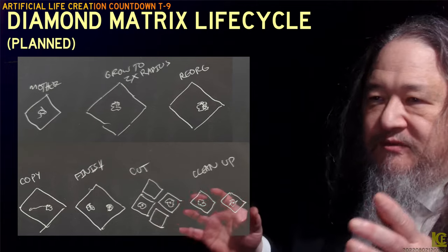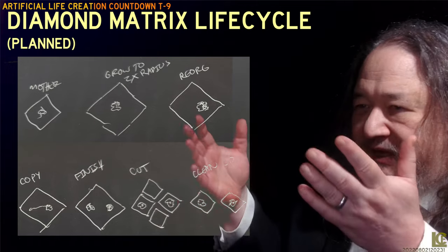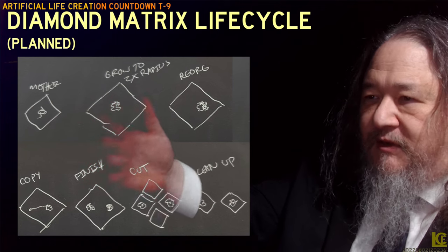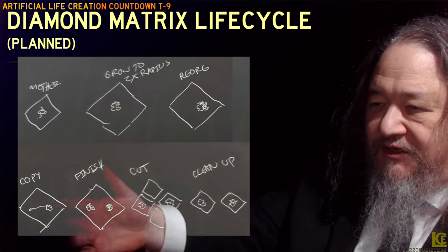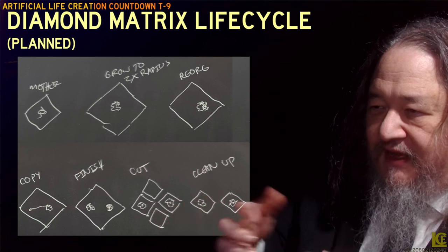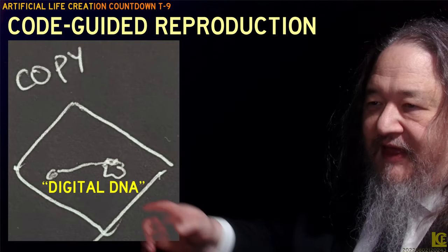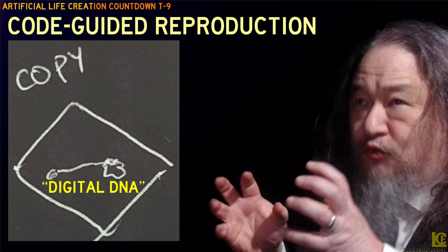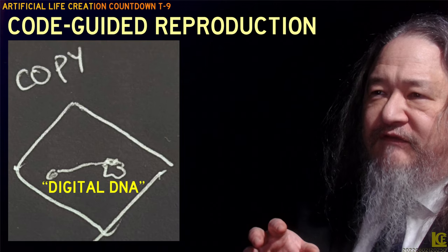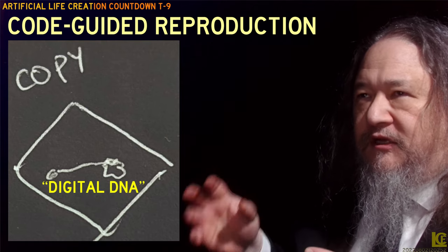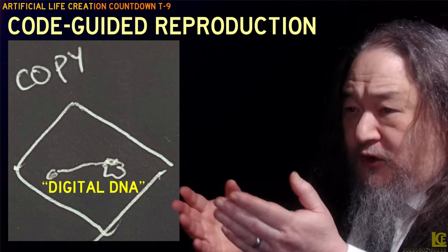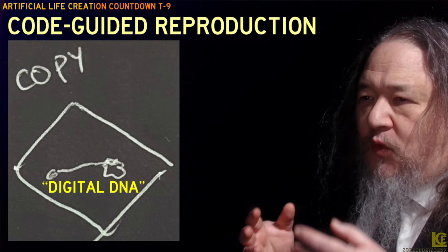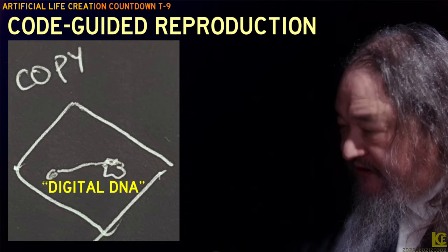So why do we need chain loops at all? The big picture is we're going to start with some diamond matrix that represents the mother. It's going to grow, move around, move its stuff, eventually split and end up with two. And that copying step is going to be copying the code that governs the reproduction itself — code-guided reproduction, including reproducing the code. And that code, that digital DNA I'm calling it, is what we're going to use this chain loop for.